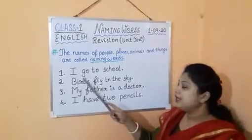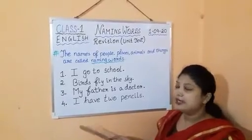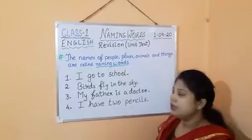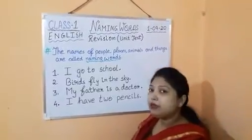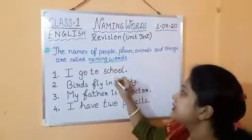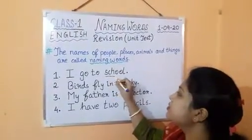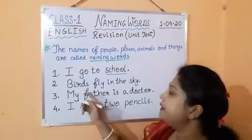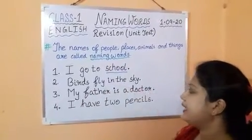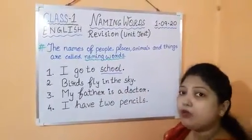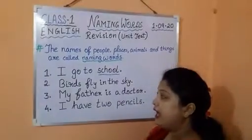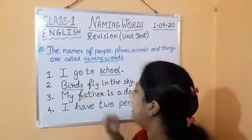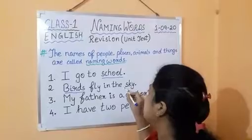Over here are some examples given. Let's see. I go to school — the naming word over here is school. Birds fly in the sky — naming words over here are birds and sky.